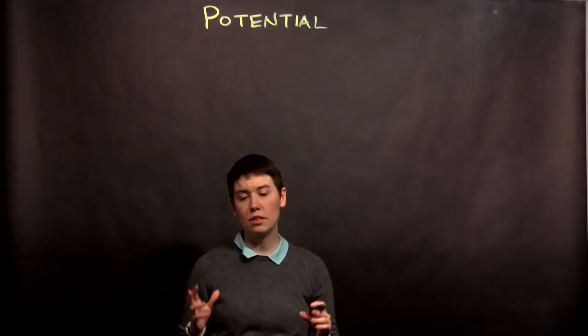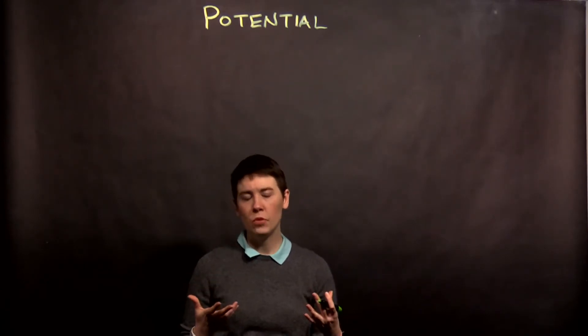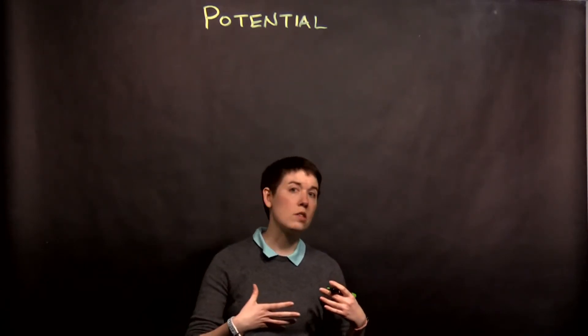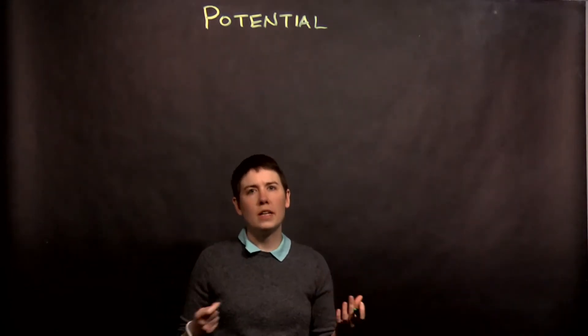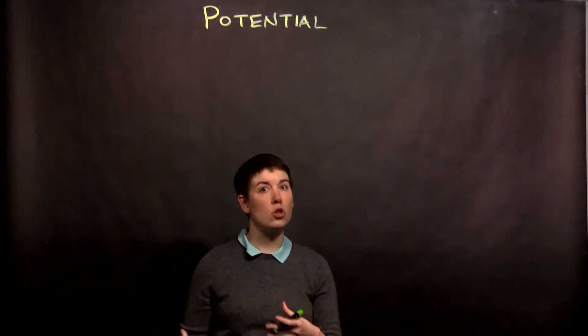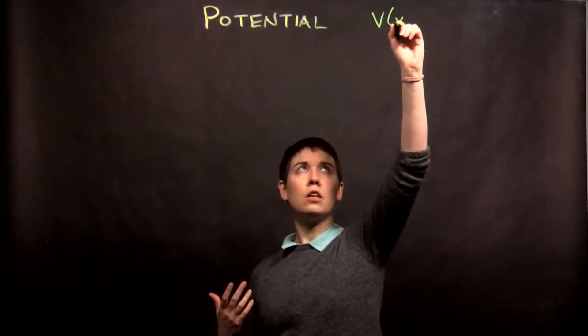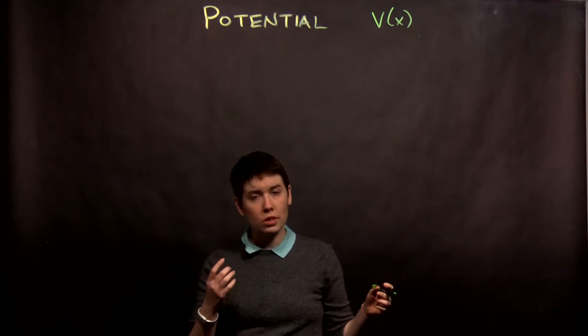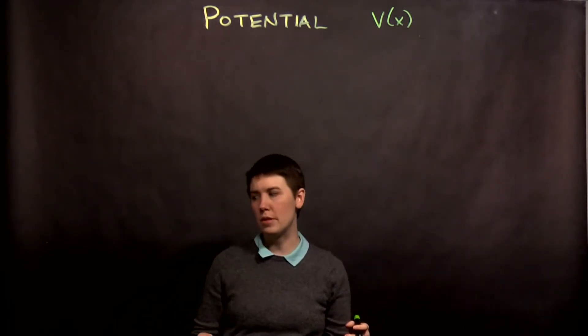I'm going to go through a few different examples of some functions we might see for our potential. Through the next couple of weeks of the class we'll be looking at some specific systems, and it's helpful right now to just understand when we're working with the general form of the Schrödinger equation what might these V of x look like. Initially we're going to start with one-dimensional systems but eventually we can get to two-dimensional and three-dimensional systems.